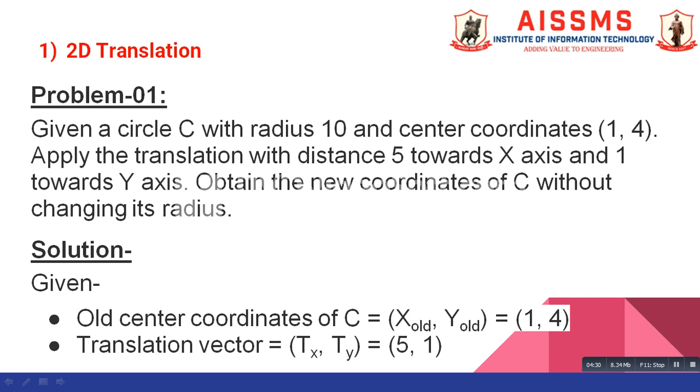Now, let us see the solution for this problem. Given, given old center coordinates C as X old comma Y old is equal to 1 comma 4. And translation vector TX comma TY is equal to 5 comma 1. Here, we have just written things given to us in problem statement in our standard format.